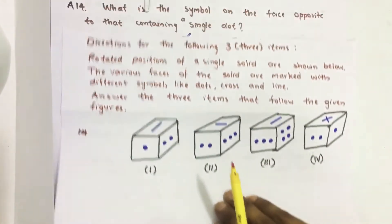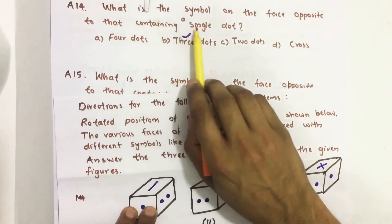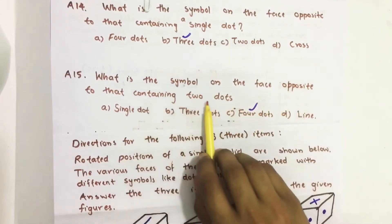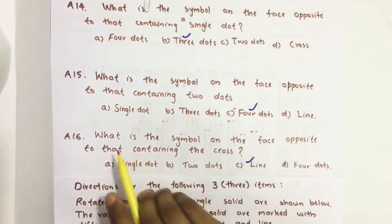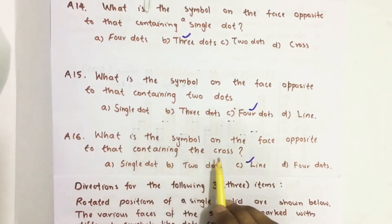So let's see those questions. Question number 14, what is the symbol on the face opposite to that containing a single dot? What is the symbol on the face opposite to that containing two dots? 16, what is the symbol on the face opposite to that containing the cross?